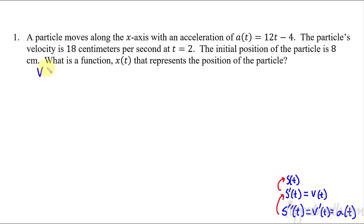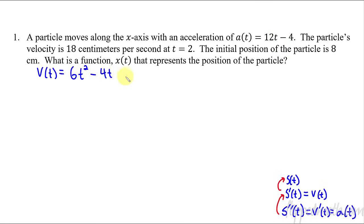V of t is going to equal the antiderivative of this. So let's take the integral. The antiderivative is 12t squared over 2, so 6t squared, minus 4t, and then plus some constant. I'm going to call this constant a little v here — constant for the velocity. Now, what did they give us?